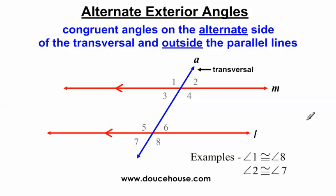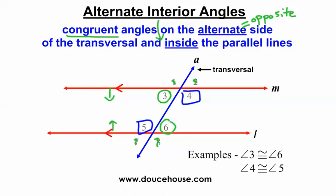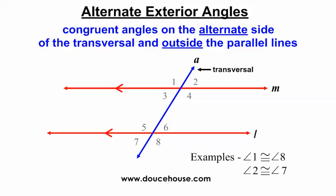Just like alternate interior angles, alternate exterior angles have a lot of similar qualities. Alternate exterior angles are congruent angles on the alternate side of the transversal and outside the parallel lines. The only thing changing is the word interior to exterior. The exterior of my house is the outside of my house. So we're focusing only on angles on the outside of the parallel lines, eliminating angles three, four, five, and six.